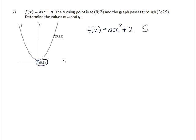Now, in order to solve for a, we can use the fact that they've given us an x and a y value, or in this case an f of x value, and we can substitute that in place of the f of x and the x. So 29 will be equal to a times 3 squared plus 2.